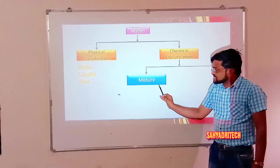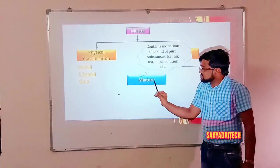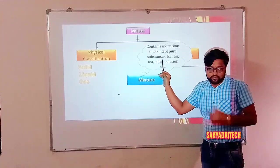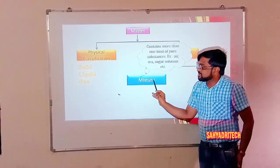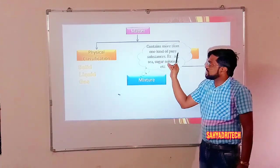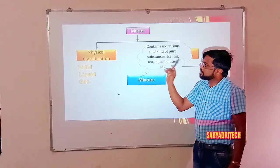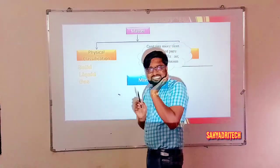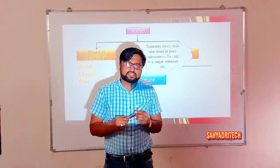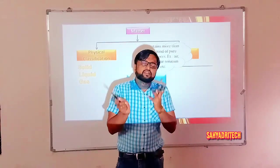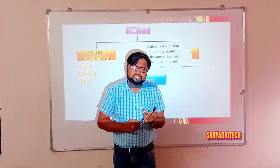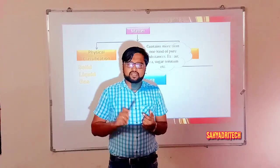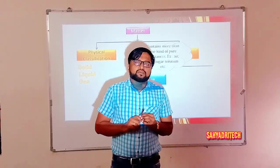Based on chemical properties, matter can be classified into two types. The first type is mixtures — these are substances which contain more than one kind of pure substance. For example, air is a mixture of gases: nitrogen, oxygen, carbon dioxide, and some other rare gases are all present in air.